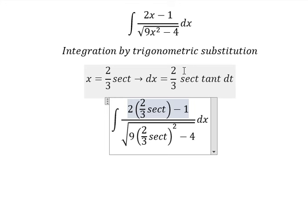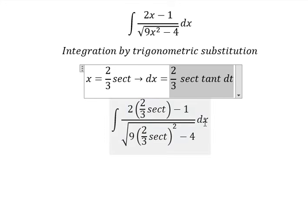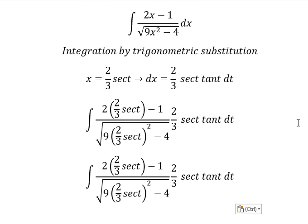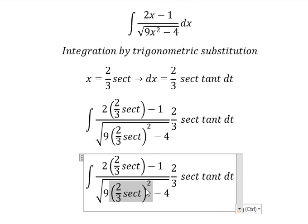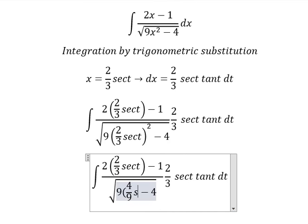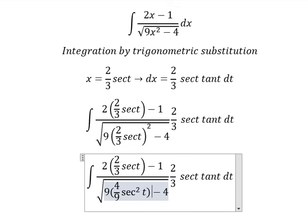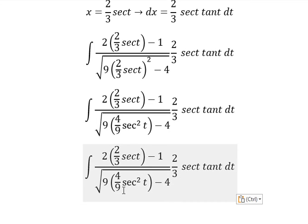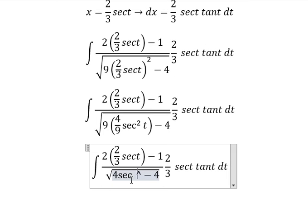The x we change by this one. So we have 4 over 9 secant of t square. Number 9 we cancel. So we have 4 secant of t square.